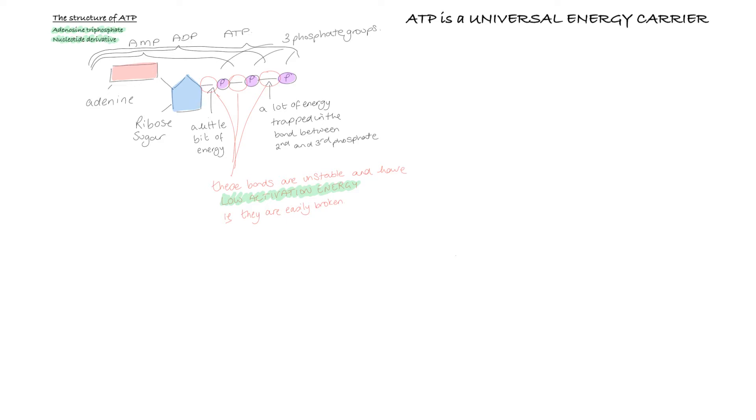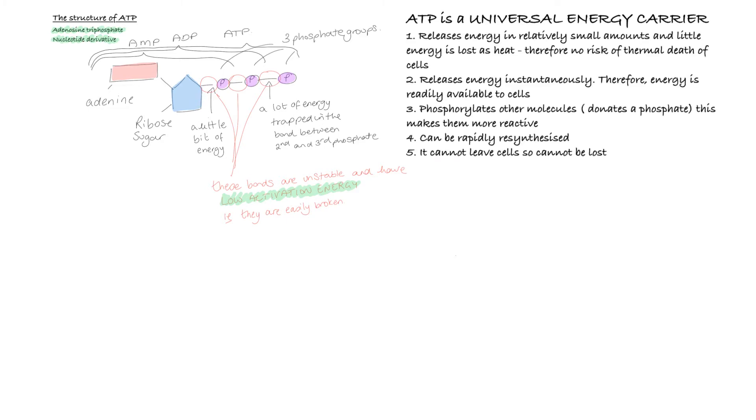So let's summarize those points as to why ATP is the most suitable energy carrier molecule for cells. One, it releases energy in relatively small amounts. This means that very little energy is lost as heat, and so there's very little danger of thermal death of our cells, so our cells aren't going to overheat and die.